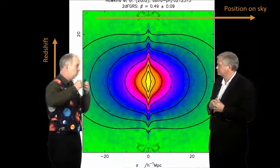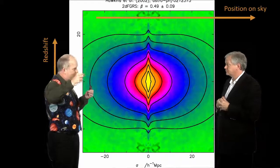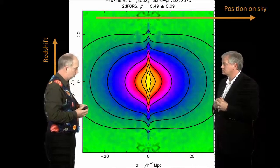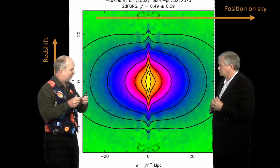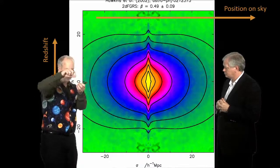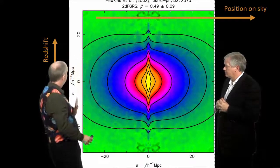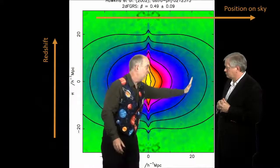Now, if there were no peculiar motions, redshift would tell you distance. But because there are peculiar motions, due to mass, there's some funny effects going on. And what they've got to plot here is, for each galaxy, they've plotted the relative position of every other galaxy. They've plotted the relative redshift up here, and the relative position across the sky along here.